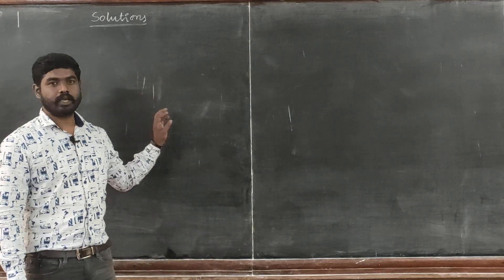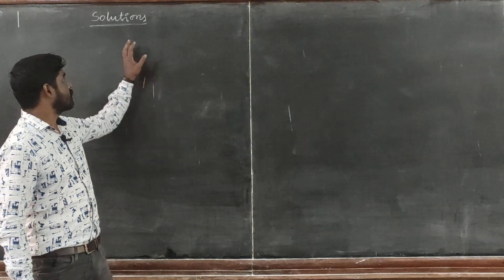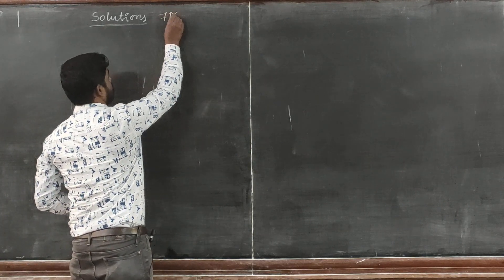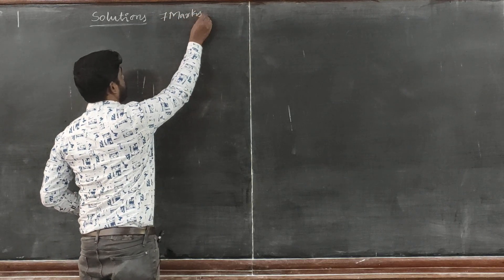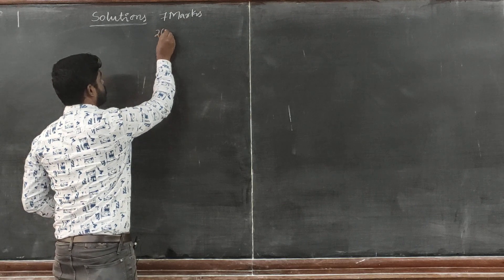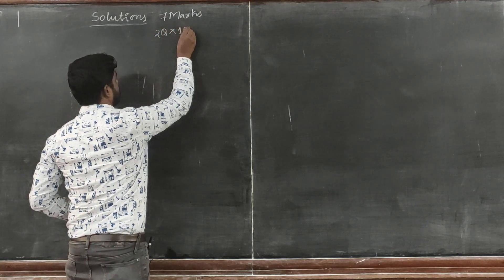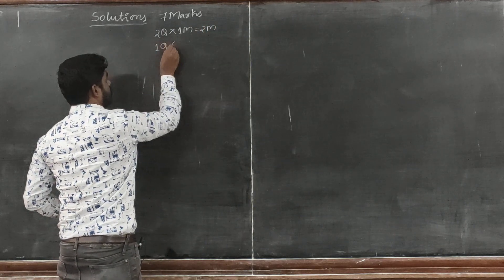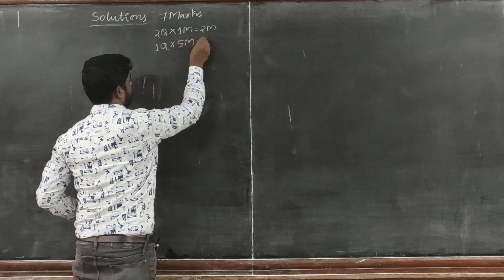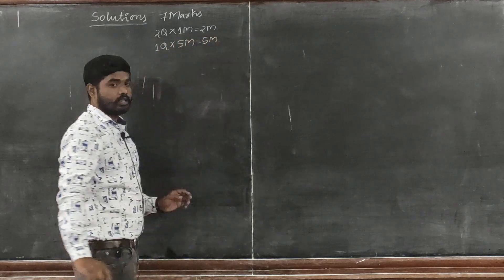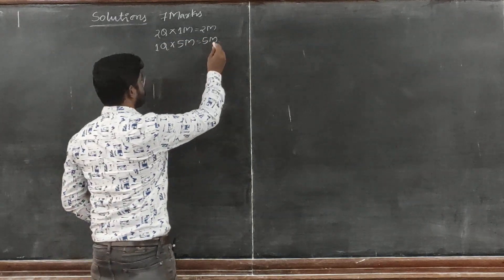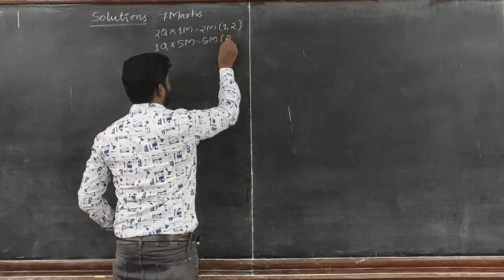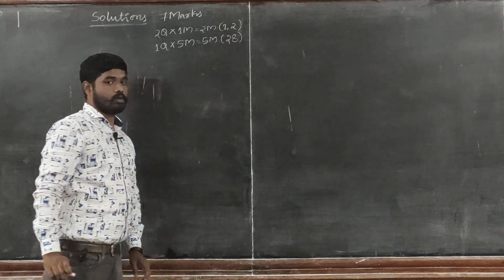Friends, today we will begin with physical chemistry. The chapter is solutions, and it has a weightage of 7 marks. We are going to have 2 questions for 1 mark each, so total is 2 marks, and 1 question for 5 marks. The question numbers are fixed — question number 1 and question number 2 — and for the 5-mark question, question number 20A will be the consolidation chapter.